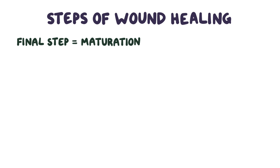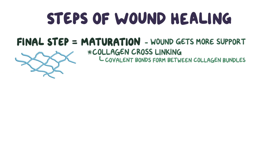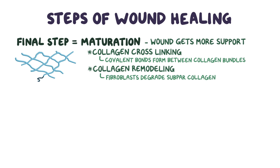The final phase of wound healing is termed maturation, where the wound gains even more physical support. First, there's collagen crosslinking, where covalent bonds form between collagen bundles, enhancing the tensile strength of the wound. Next, there's collagen remodeling, where fibroblasts degrade old or misshapen collagen from the injury, like when old rotten wooden beams are replaced before putting up new ones in a house.